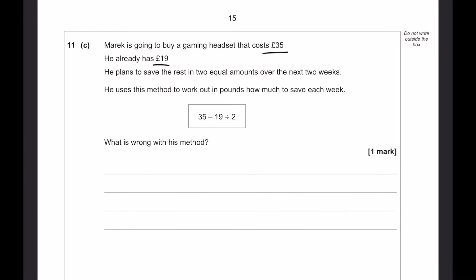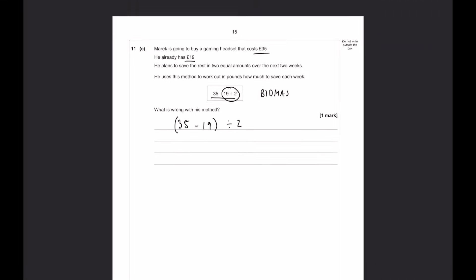One of the 60 people is chosen at random. What is the probability that they own both a gaming headset and a smartwatch? Well, we go to our middle section, that's 7, and that's going to be 7 over 60 as our probability. Here we have someone that's going to buy a gaming headset that costs £35. He already has 19. Plans to save the rest in two equal amounts over the next two weeks. With these questions that involve finding what's wrong with a method, I recommend just doing it yourself. Now, with this one, if you put it in the calculator, it basically comes down to bidmas. Because the calculator works out the division first, so what we would need to say is do 35 minus 19 first, and then divide that by 2. That is what's wrong with this method.